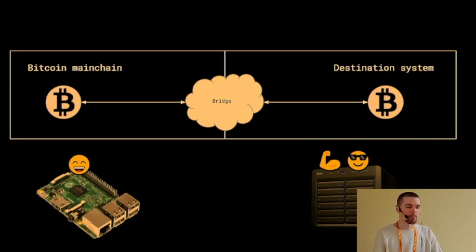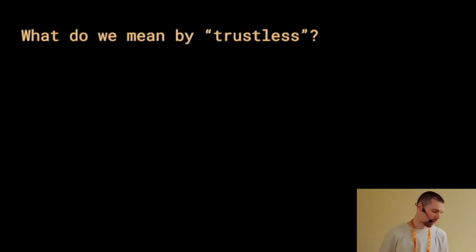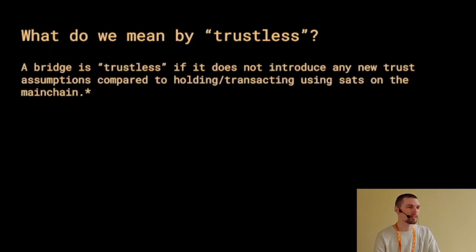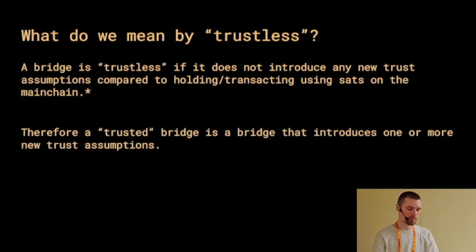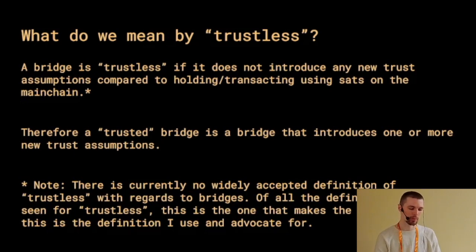Let's talk about the different types of bridges that exist or could exist, but first a semantics detour. I'm going to use the term 'trustless.' I'll define trustless as: a bridge is trustless if it does not introduce any new trust assumptions compared to holding and transacting sats on the Bitcoin mainchain. Therefore, a trusted bridge is a bridge that introduces one or more new trust assumptions. I know there's not currently a total consensus on this definition, but in this context I think it's a reasonable one.